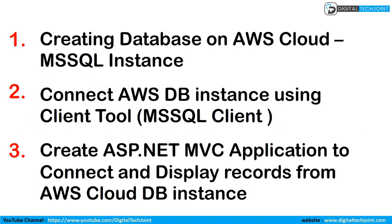We are going to create the following three action items. First, we are going to create a database in the AWS cloud platform — an MS SQL database, that is Microsoft SQL Server. Then we'll see how to connect from our local PC to the cloud database using an MS SQL client tool, and finally create a small ASP.NET MVC application, connect to the cloud database, and fetch and display the records in our view.